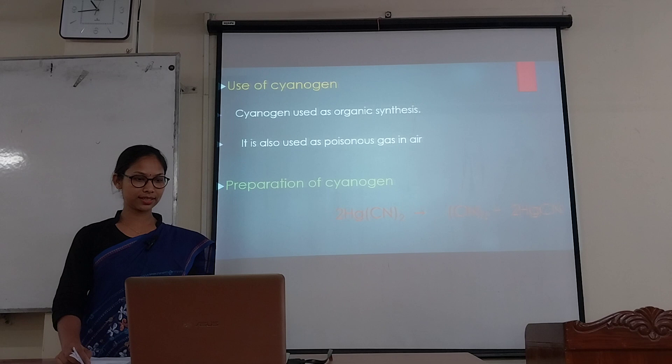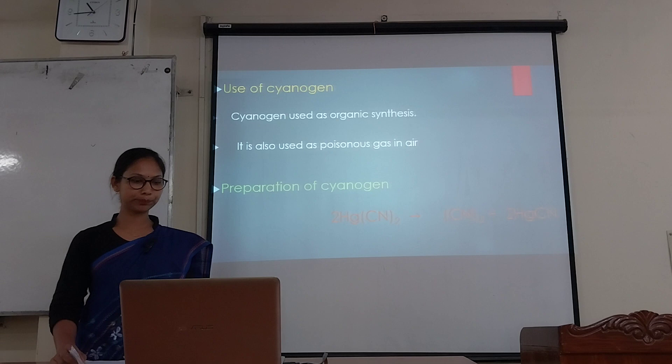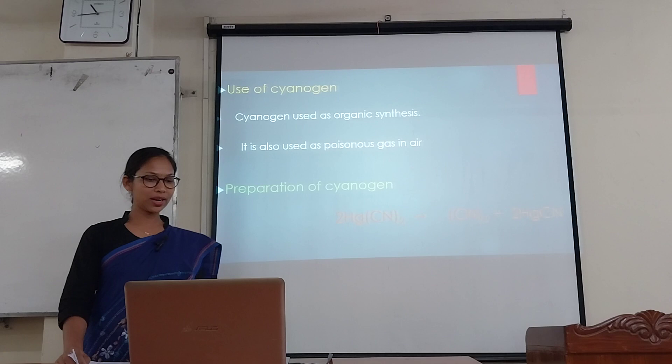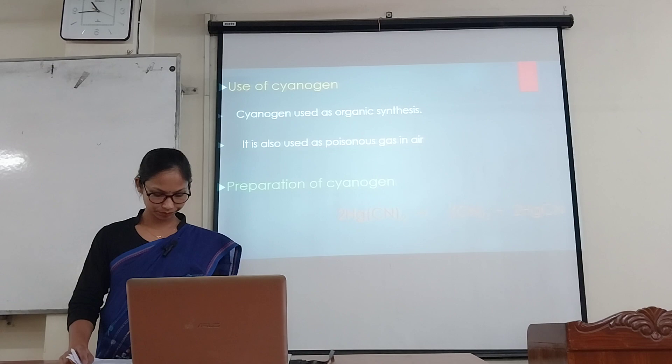Uses of cyanogen: cyanogen is used in organic synthesis. It is also used as a poisonous gas in air. Preparation of cyanogen: cyanogen can be prepared by the decomposition of mercuric cyanide. The reactions are given ahead.